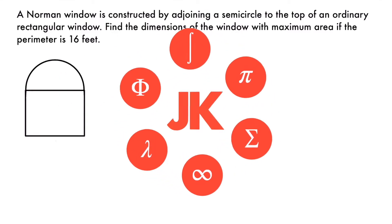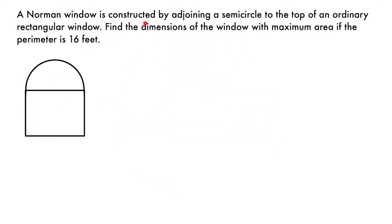Here we have an optimization problem where a Norman window is constructed by adjoining a semicircle to the top of an ordinary rectangular window. We need to find the dimensions of the window with maximum area if the perimeter is 16 feet. To solve this optimization problem, we want to set up two equations.